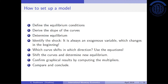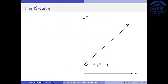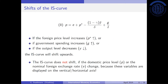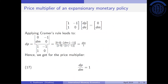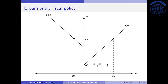We want to find out how a fiscal shock is digested — how do the endogenous variables react when the government increases government spending. First, we need to find out in which direction the IS curve shifts. As shown on slide 10, government spending affects the intersection of the IS curve with the vertical axis, so when government spending increases the IS curve shifts upwards. This is also confirmed on slide 11. Looking at the diagram on slide 24, the IS curve shifts upward and we directly find the new equilibrium.